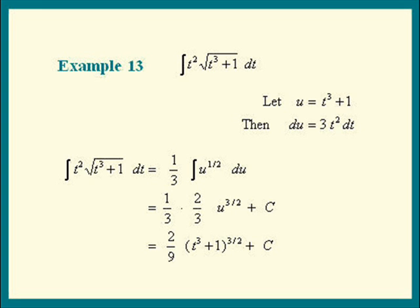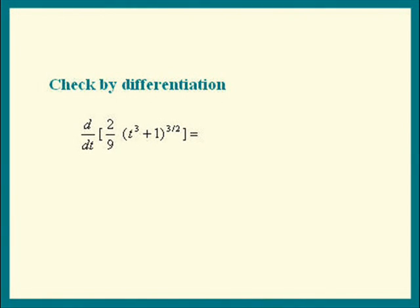Okay, let's check our answer by differentiating it. 2/9 is a constant factor, so just copy that down. And now apply the power rule for differentiation. Pull down the power. Subtract 1 from the power.